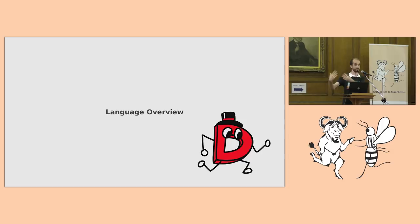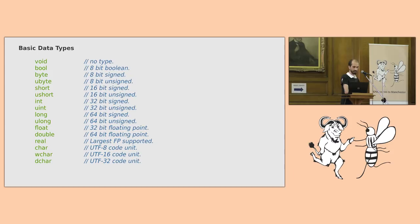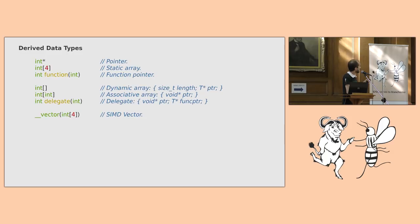So, kinds of type. Every single basic type is a fixed size, except for real, which maps to the long double type node. Pointers, static arrays, as you'd probably expect. Static arrays are actually passed around by value. They do not decay to a pointer.